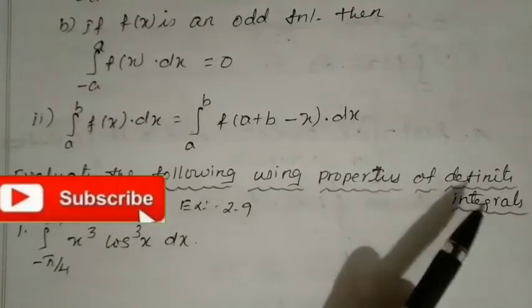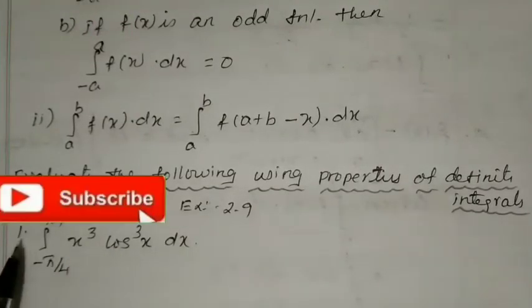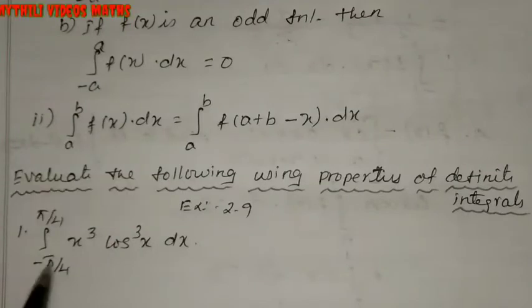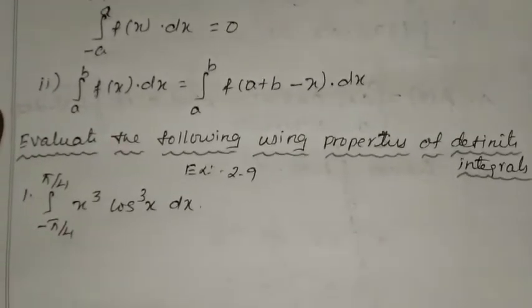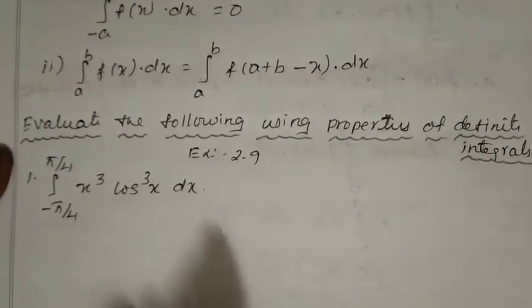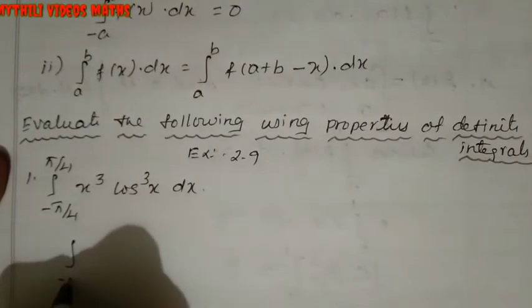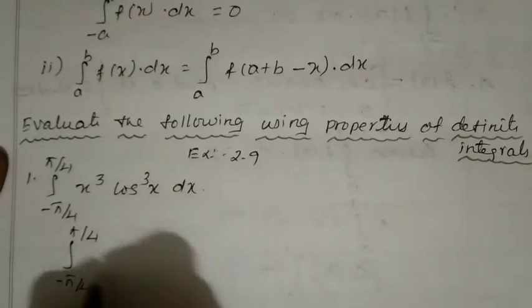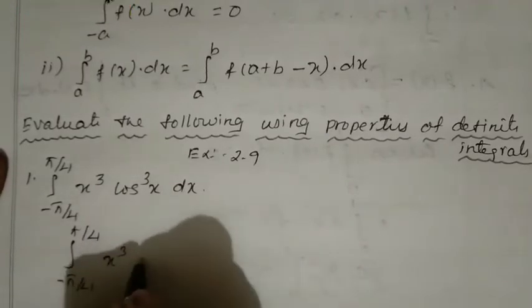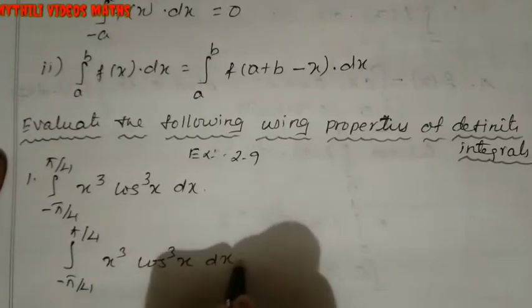Now we evaluate the following using properties of definite integrals. The first sum is the integral from minus π/4 to plus π/4 of x³ cos³x dx. So the first step is to identify whether the function is even or odd.